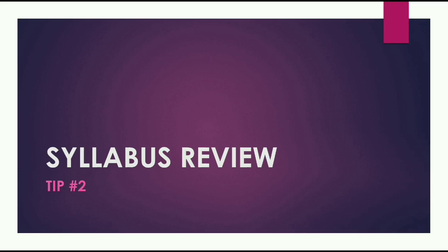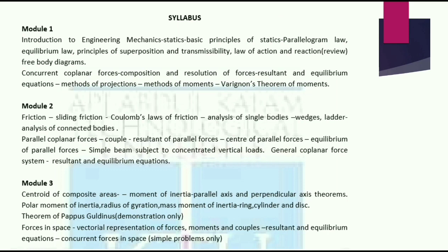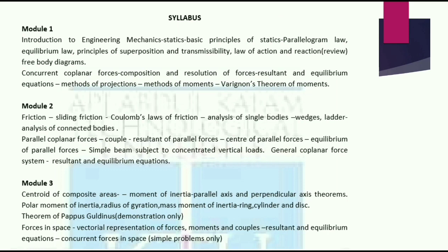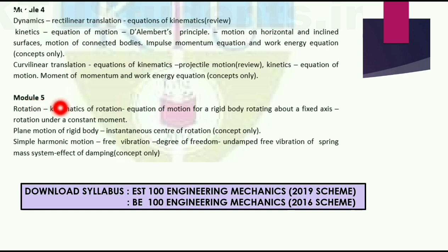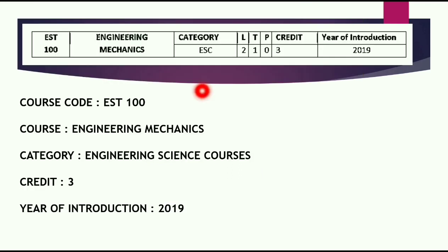Tip number two is syllabus review. You should get familiar with your syllabus and read through it two to three times. There are two schemes: the 2019 scheme and the 2016 scheme. In the 2019 scheme there are five modules, while the 2016 scheme has six modules. The contents are mostly the same, but the 2016 scheme has some extra topics. Download your corresponding syllabus — ours is EST100 under the 2019 scheme with three credits.